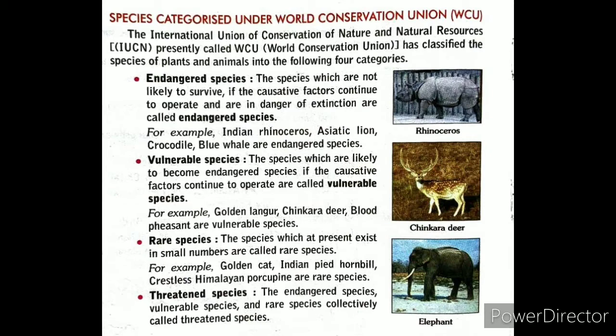The next is the Rare species. Species which at present exist in small numbers are called Rare species. Aisi species jo present time mein bahut small numbers mein exist karti hain, wo rare species hain. Examples include Golden Cat, Indian Grey Hornbill, and Himalayan Porcupine.